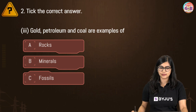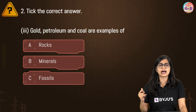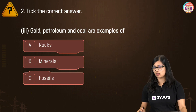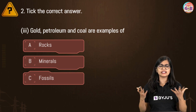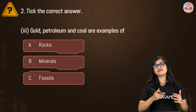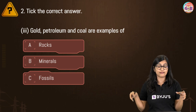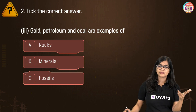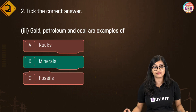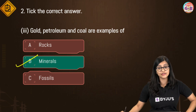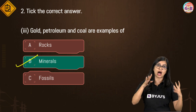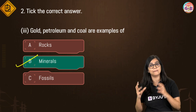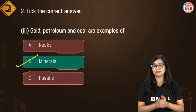Third MCQ: gold, petroleum and coal are examples of — rocks, minerals, or fossils? This is a slightly tricky question. Although coal and petroleum are formed from fossils and we call them fossil fuels, we categorize them broadly as minerals. So the correct answer is option B, minerals.